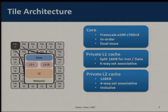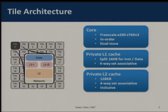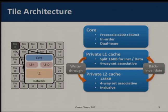Let's take a look at the tile architecture. All 36 tiles are homogeneous, and each tile consists of a core and a two-level cache hierarchy. We use the E200 core from Freescale. The core is dual-issue and in-order. Both L1 and L2 caches are private to the core, and we have a network connecting the L2 cache controllers and the memory controllers.